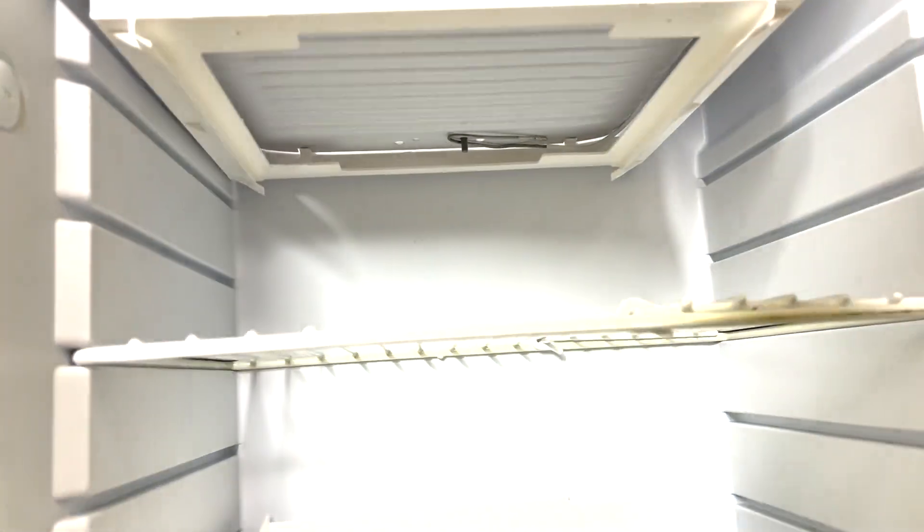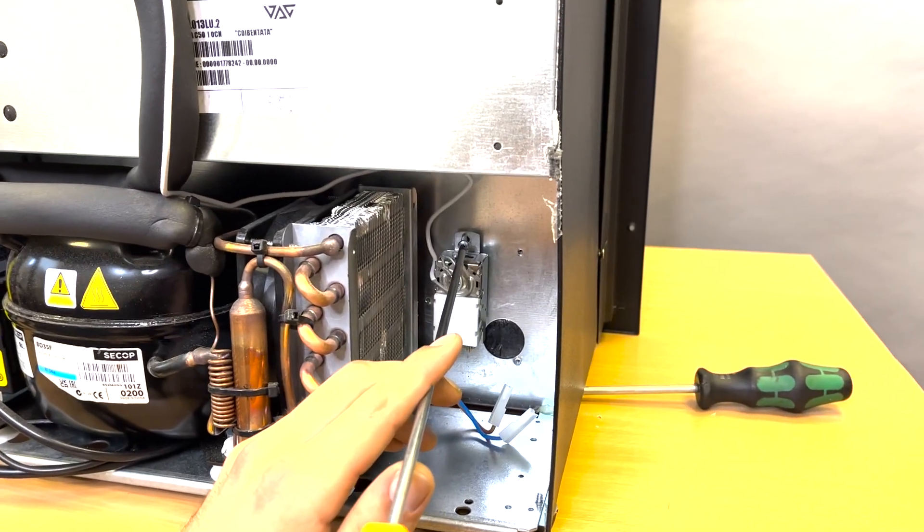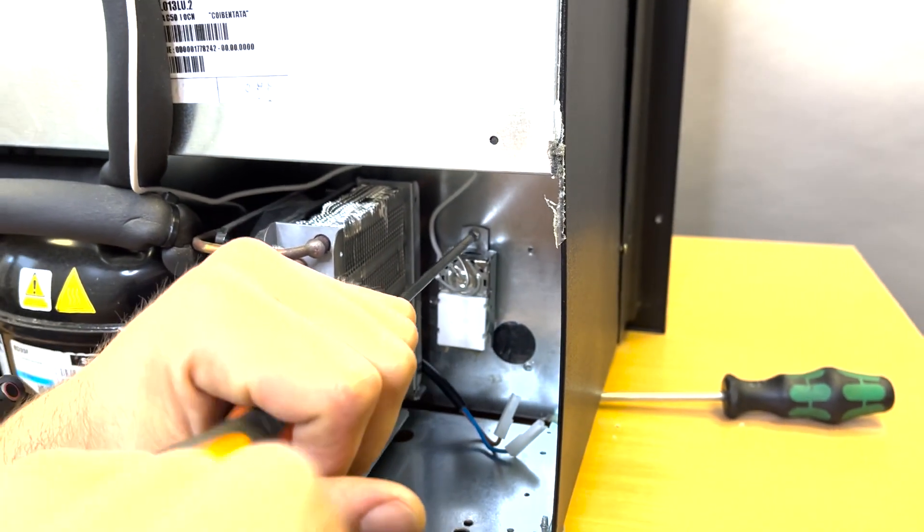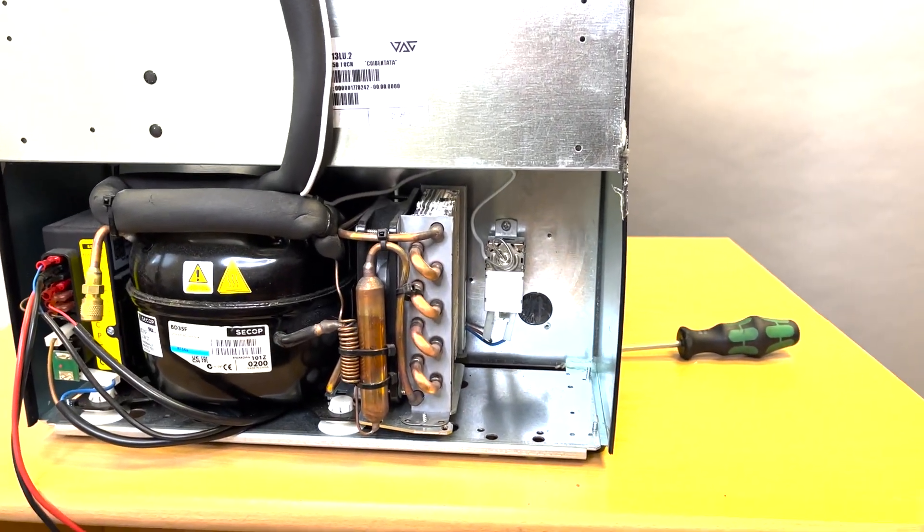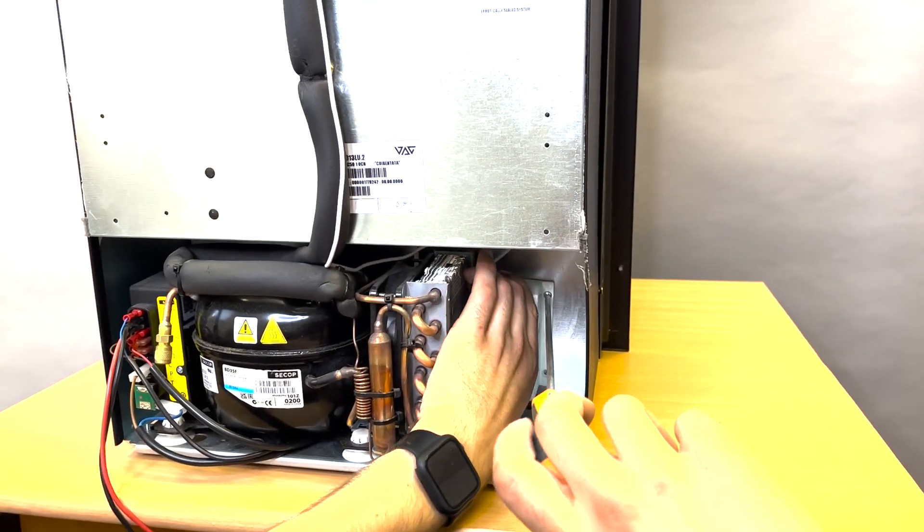Clamp the thermostat probe to the bottom of the icebox. Insert the two screws securing the thermostat to the fridge. Reinsert the wires back into the thermostat. Refit the thermostat case using the three screws.